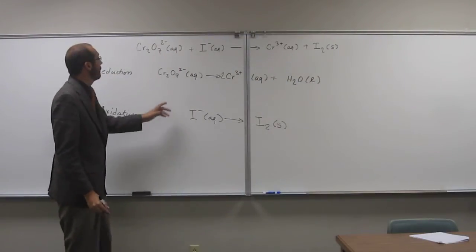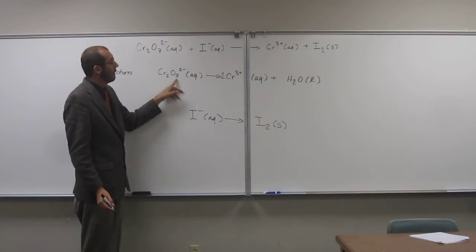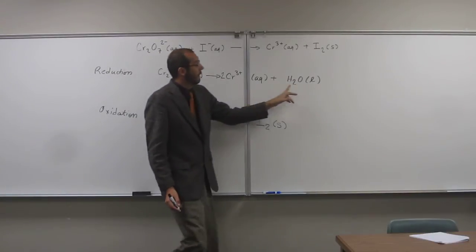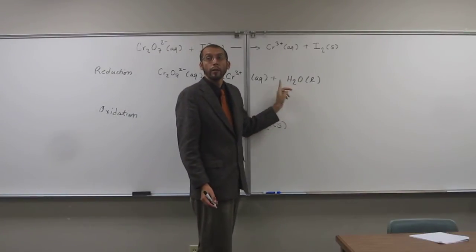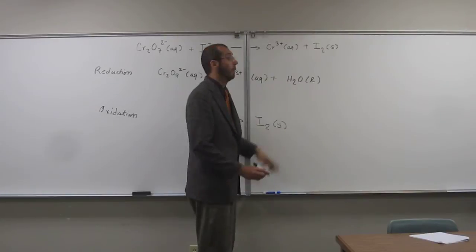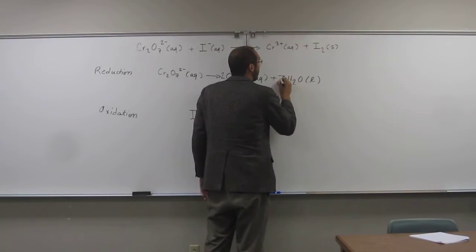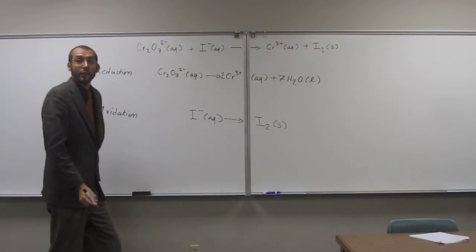So H2O liquid like that. And we say, well, there's seven oxygens here, and there's only one oxygen in water, so there must be seven waters that have been formed. Does that make sense?